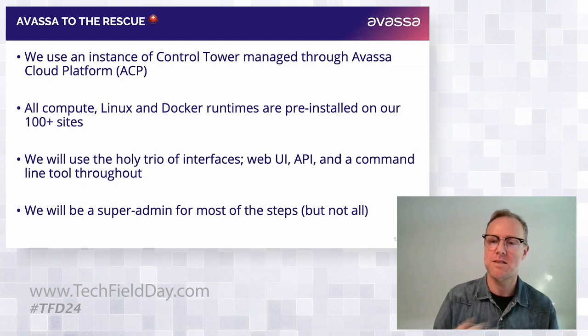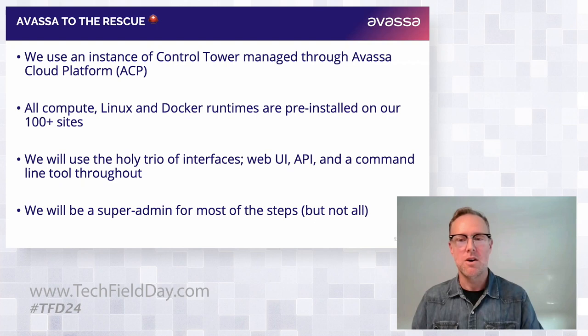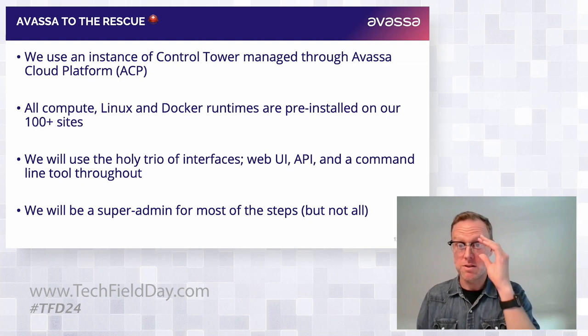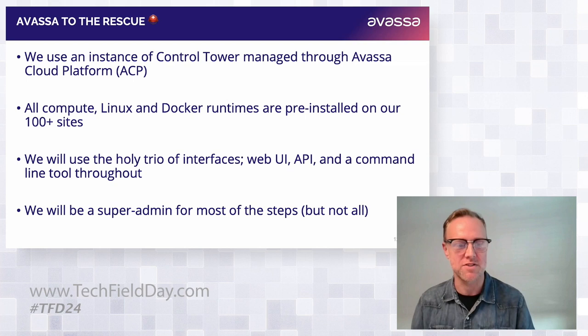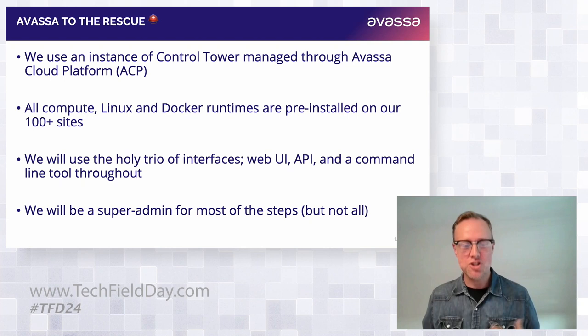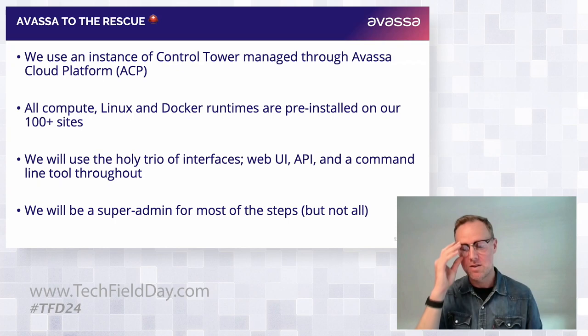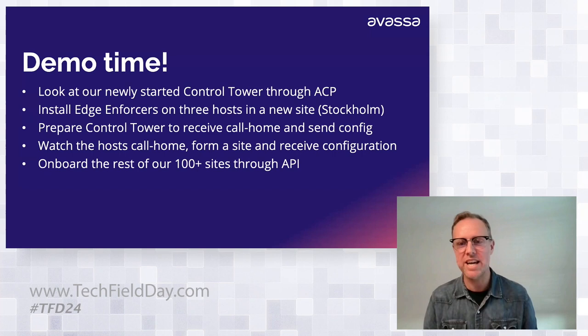We're going to use an instance of the Control Tower managed through our Avasa Cloud Platform. All the compute — Linux and Docker runtimes — are pre-installed on all 100-plus sites by our infrastructure team. We're going to use three types of interfaces: web UI, API, and a command line tool. We'll start out as a super admin, who has full control over both the sites and the ability to deploy applications.